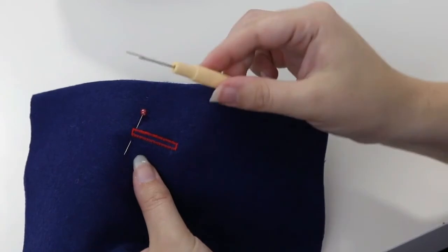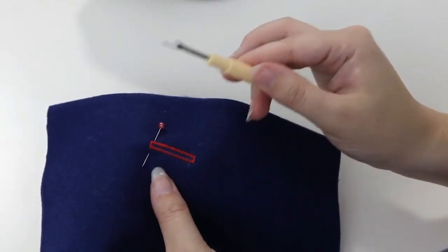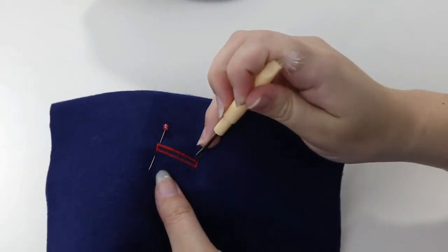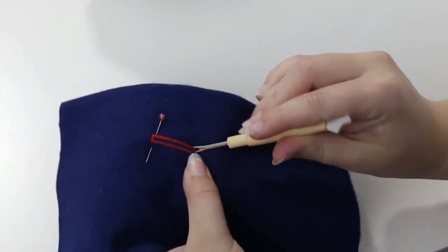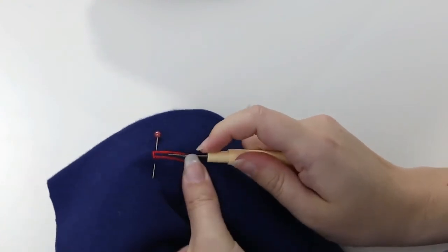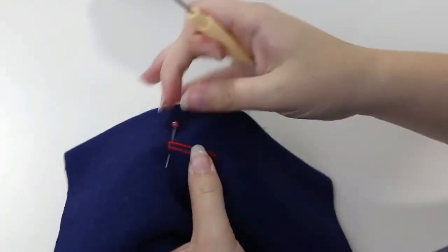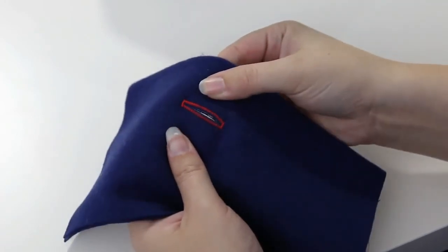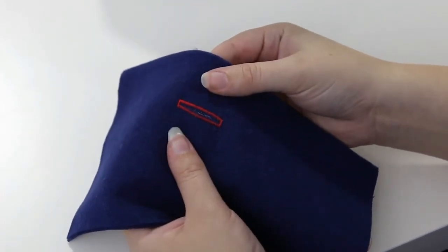In your accessory tray, there's a seam ripper and it's also super useful for opening buttonholes. Place it at the bottom and work your way up. Remove your pin and ta-da! A fully functioning buttonhole.